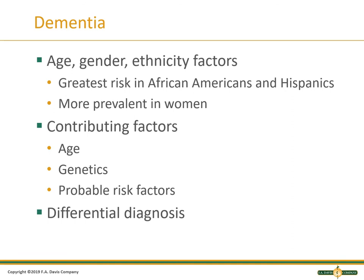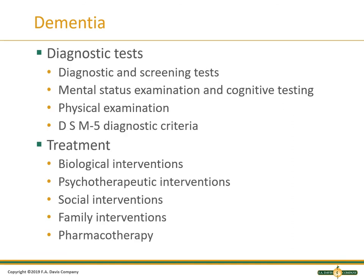Contributing factors include age, genetics, and probable risk factors. Age and genetics are non-modifiable, so knowing that family history will help clue you in. Make sure there's no other differential diagnosis. We look at diagnostic tests: screening tools, mental status examinations, cognitive testing, physical exam findings, how they interact with people, and the DSM-5 diagnostic criteria. Treatment can be biological interventions, psychotherapeutic interventions, social, family, and pharmacotherapy.